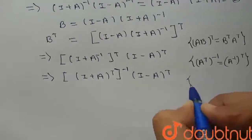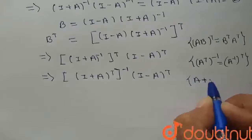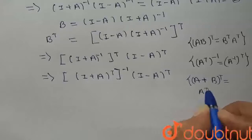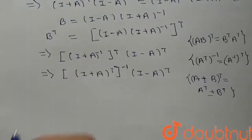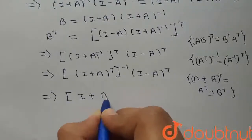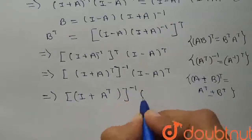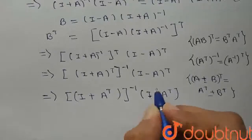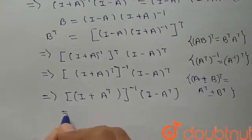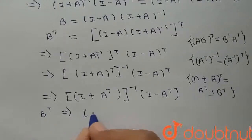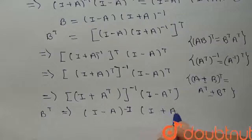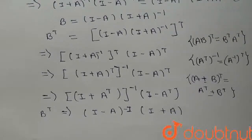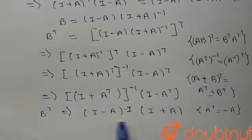Using the property that (A plus B) transpose equals A transpose plus B transpose, and similarly for minus, we expand. Since I transpose equals I, and since A was given as a skew symmetric matrix meaning A transpose equals negative A, the sign changes. So B transpose becomes (I minus A) inverse into (I plus A).